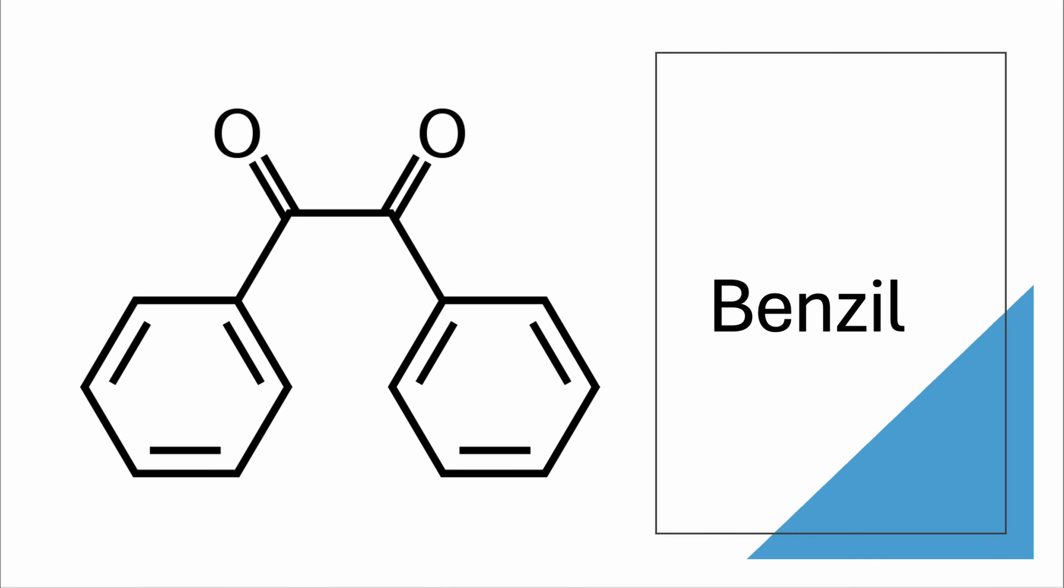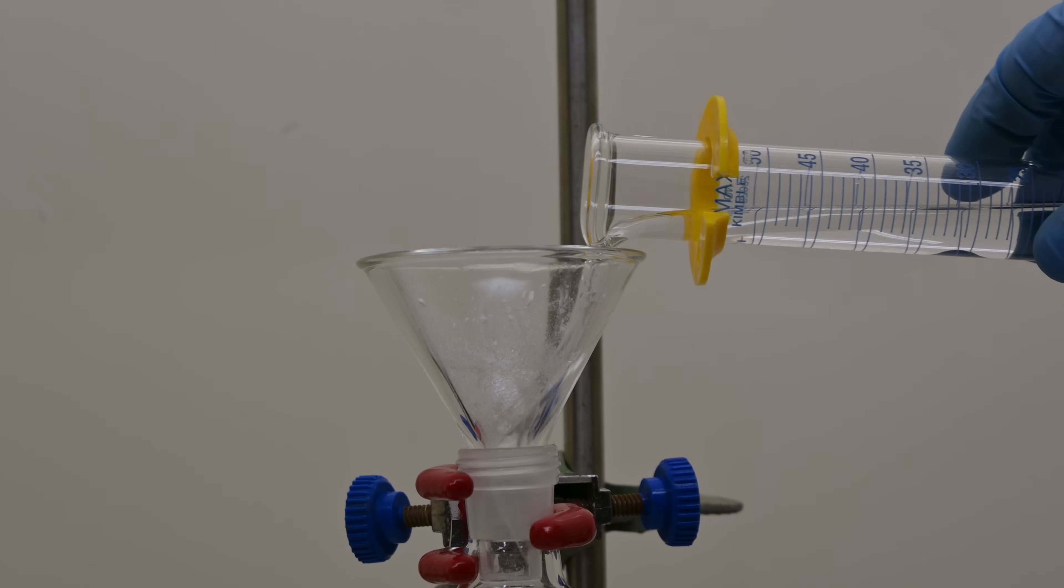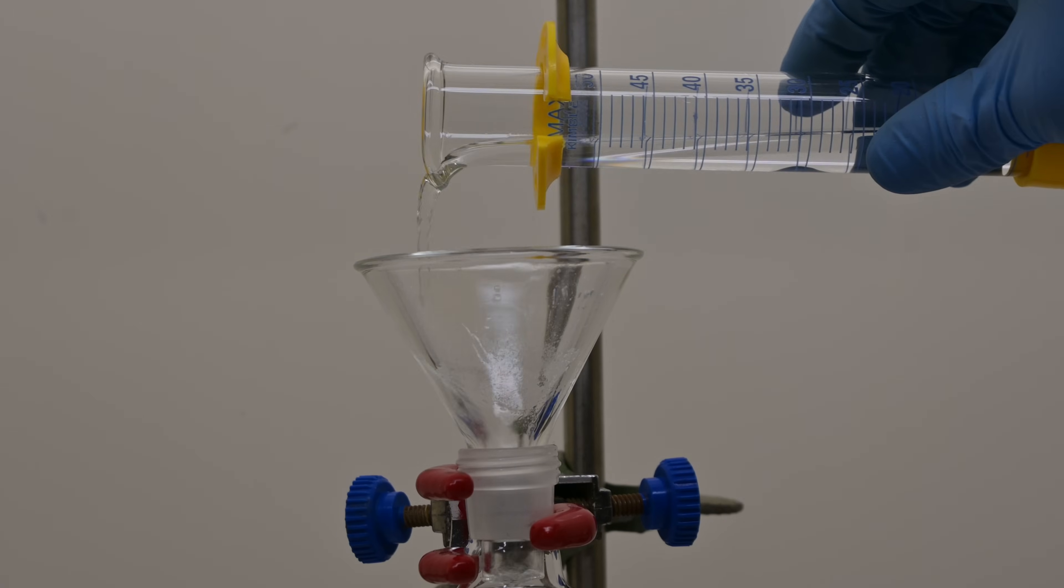Now we're ready to move on to the next step, converting benzoin to benzil. First, let's carefully weigh out 4 grams of finely pulverized ammonium nitrate and place it into a clean dry 100 milliliter round bottom flask equipped with a magnetic stir bar. Next, we add 8.5 grams of benzoin into the flask. Then we transfer 25 grams of glacial acetic acid into the flask.